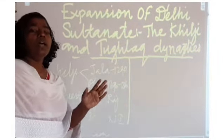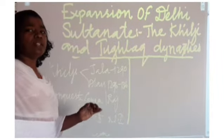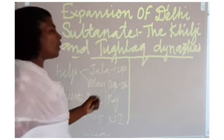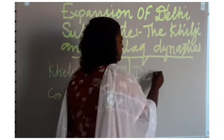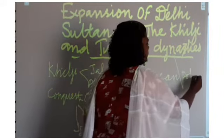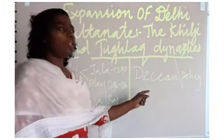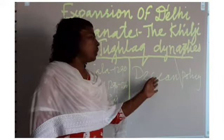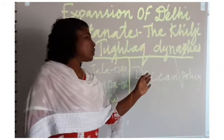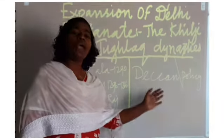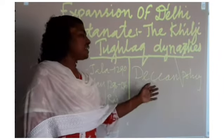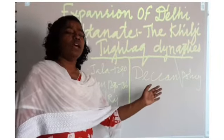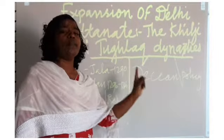The Deccan consisted of different wealthy temple cities. His main motive was to plunder those temple cities and use the wealth to maintain his huge army. As part of the Deccan policy, he reached the Deccan region, plundered the temple cities, and used the wealth to maintain his army.